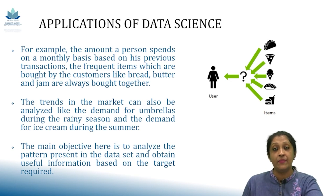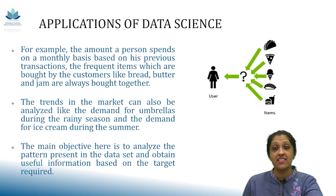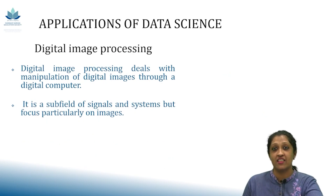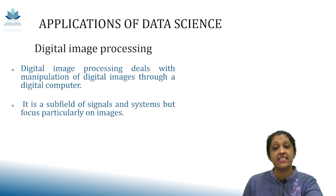For example, Netflix and Amazon Prime Video will give the user recommendations as per their likes and dislikes. Next is digital image processing. Digital image processing deals with manipulation of digital images through a digital computer. It is a sub-field of signals and systems but focuses particularly on images.